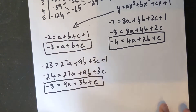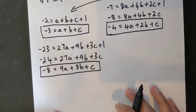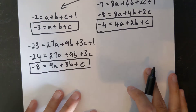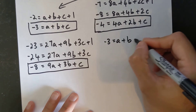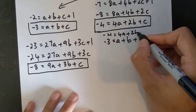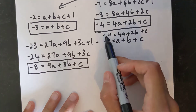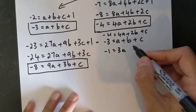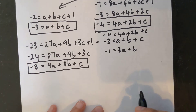Now I have three equations. I'll solve them using elimination. Starting with equations 1 and 2: −4 = 4a + 2b + c minus −3 = a + b + c. Subtracting to eliminate c: negative 1 equals 3a + b. That's a new equation with two variables.